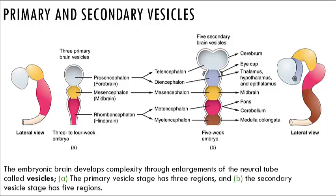As development continues, the cerebrum enlarges to the point where it covers the other portions of the brain. The forebrain ultimately becomes the cerebrum — including the cerebral cortex, white matter, and basal nuclei — as well as the thalamus, pineal gland, and hypothalamus. The hindbrain forms the brain stem, pons, cerebellum, and medulla oblongata.